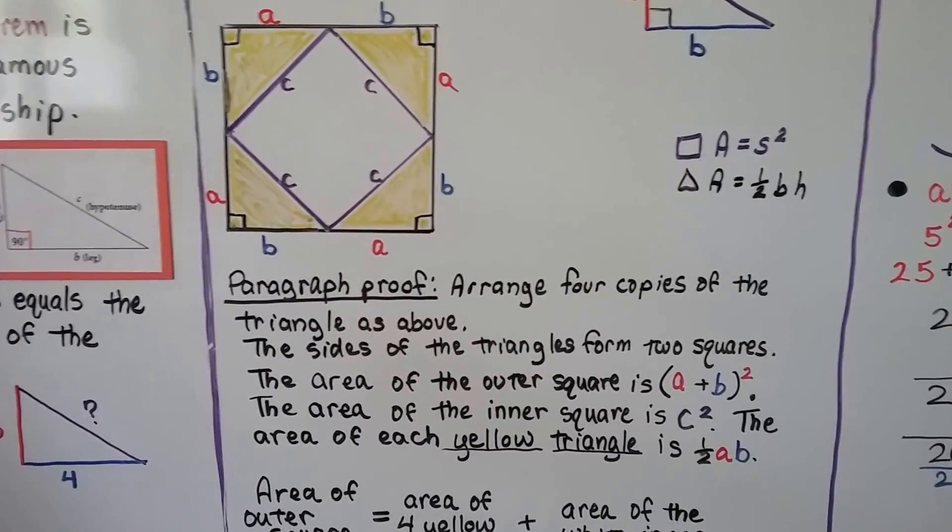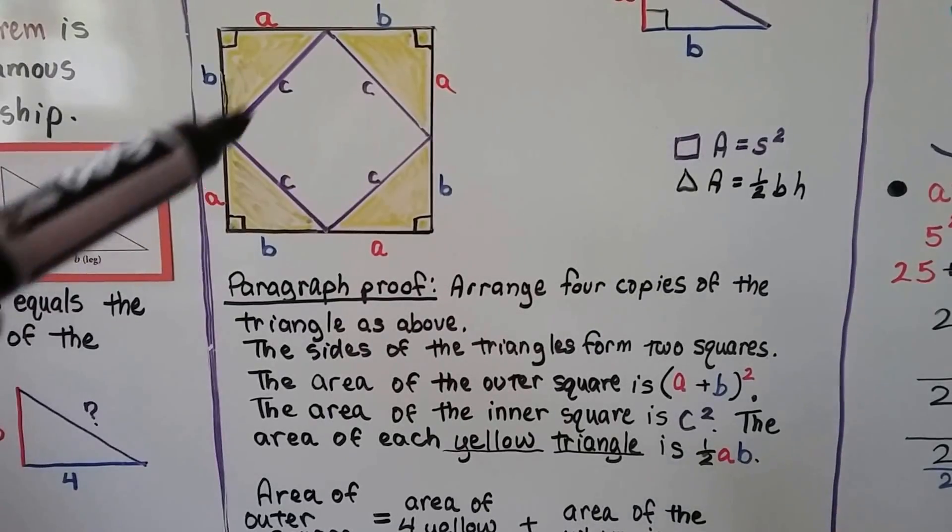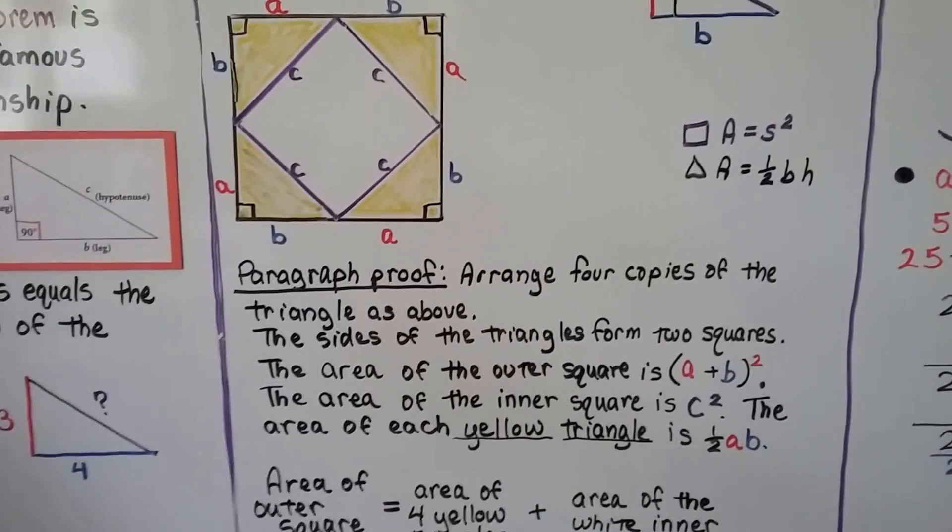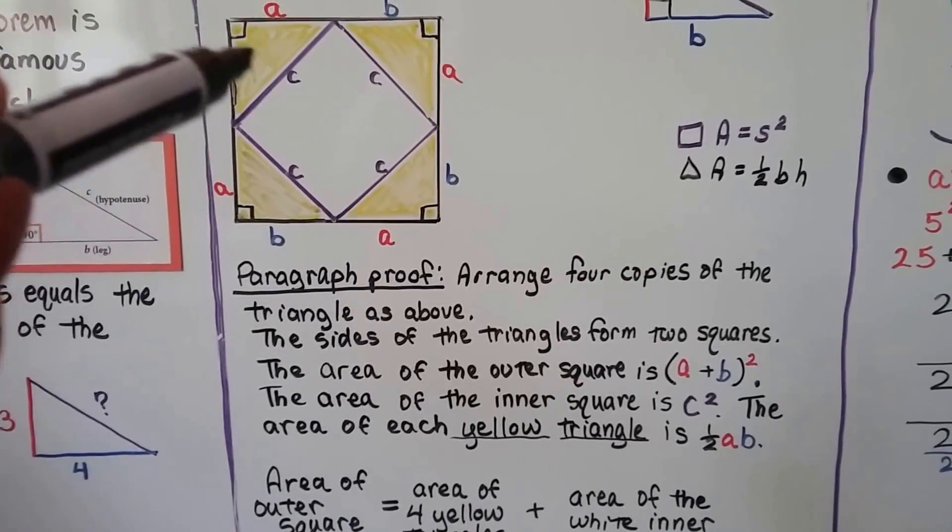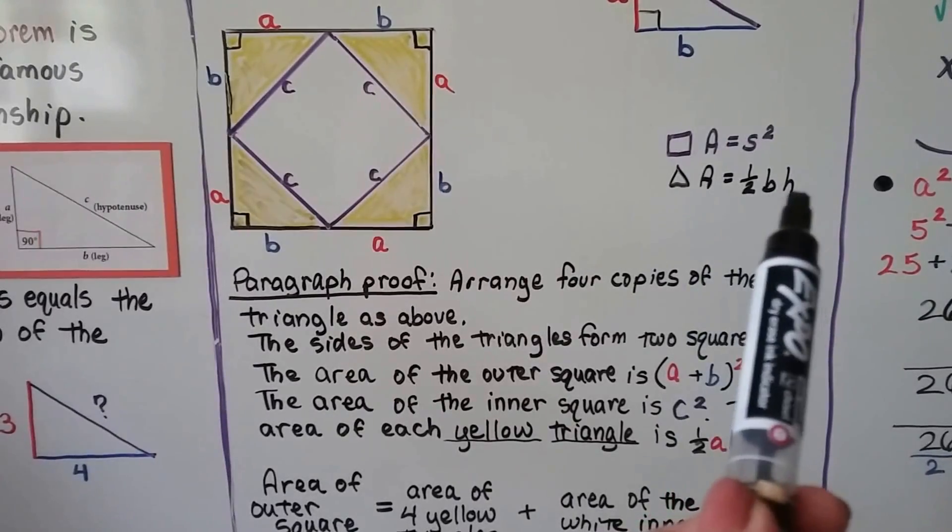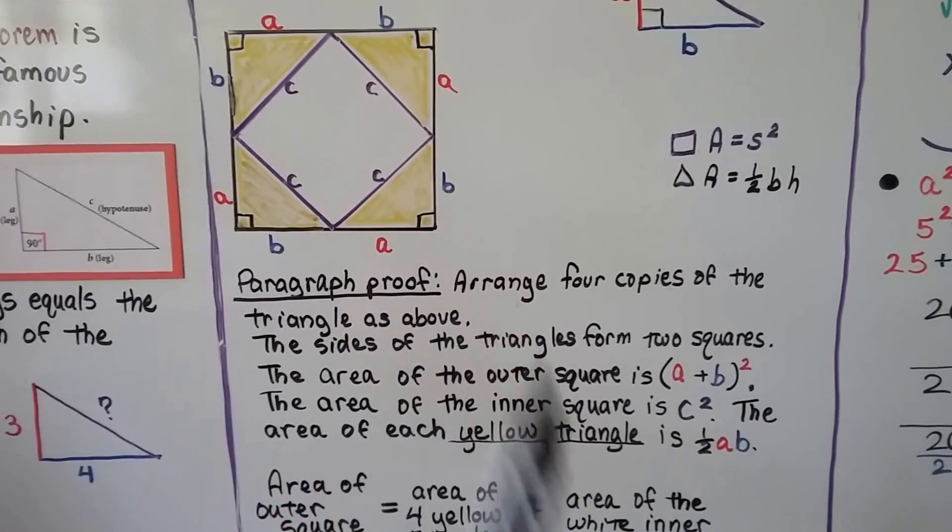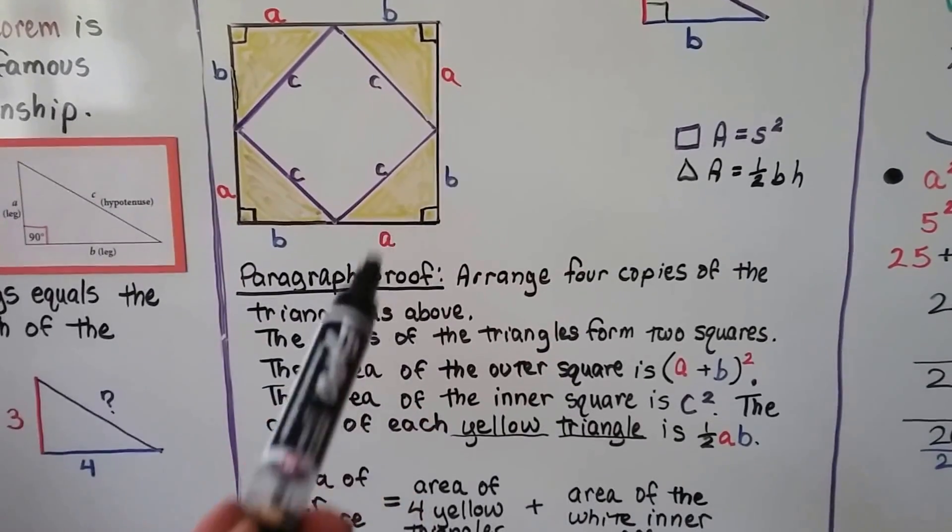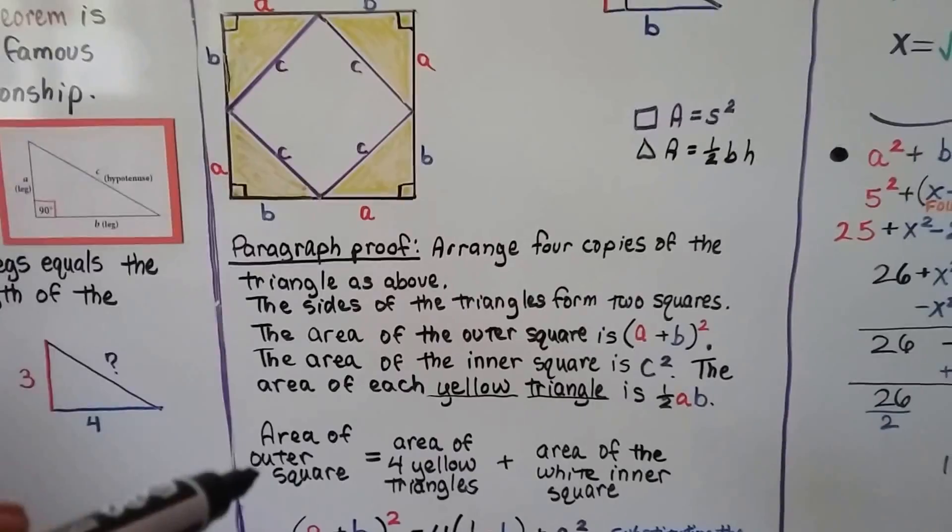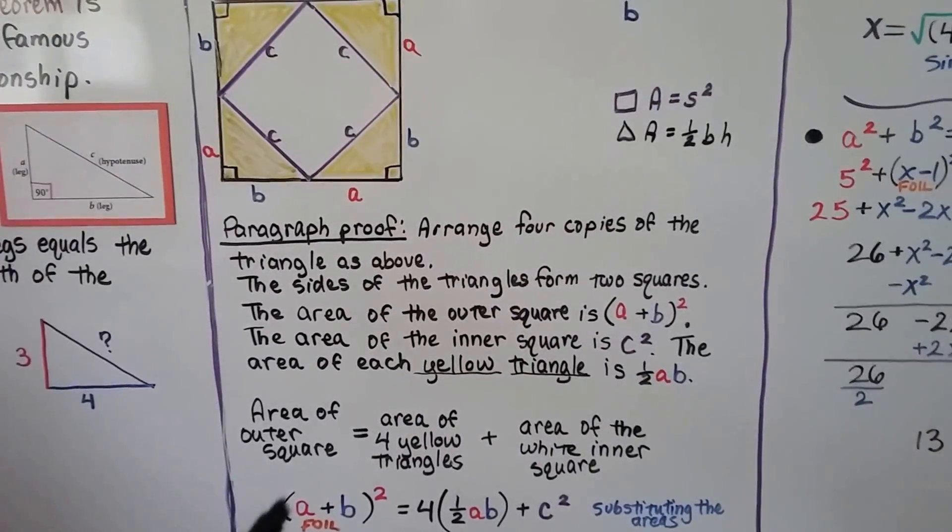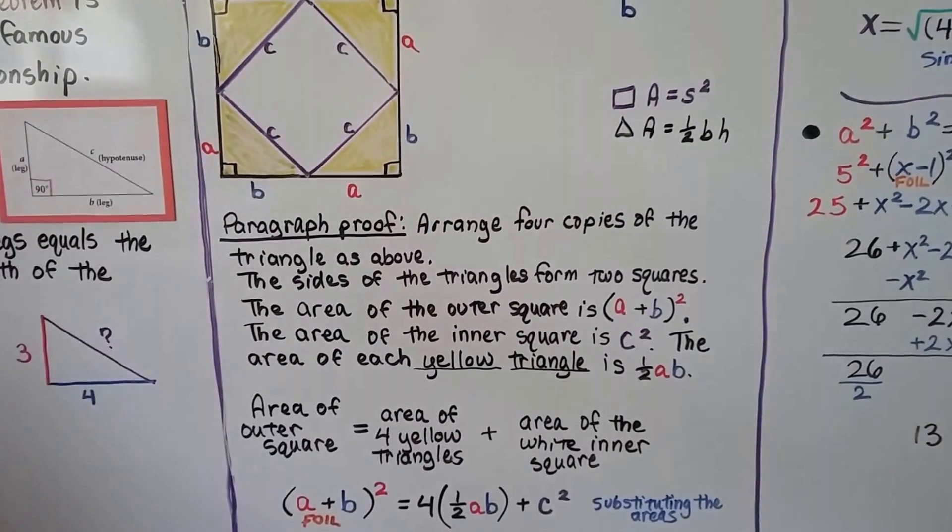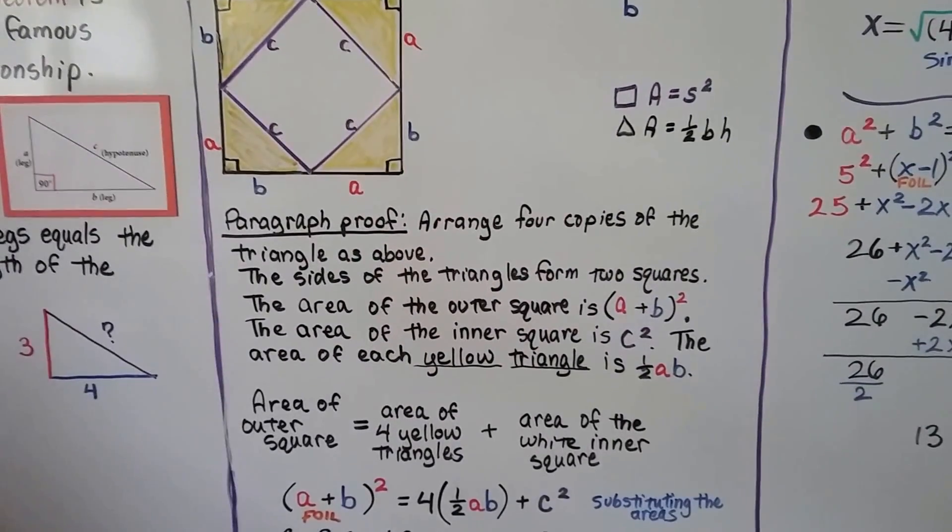And the area of the inner square is this side times this side. So it's c times c. That's c squared. And the area of each separate yellow triangle is half ab because the area of a triangle is half base height. So if we look at a as the base and b as the height, it's half base height, half ab. And the area of the outer square equals the area of the four yellow triangles plus the area of this white inner square.